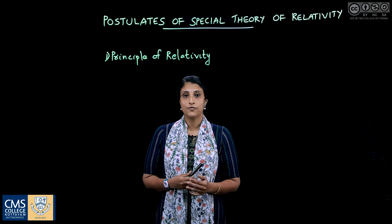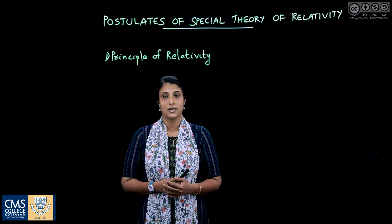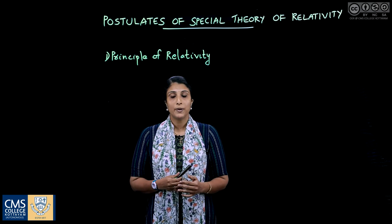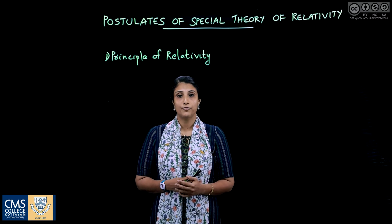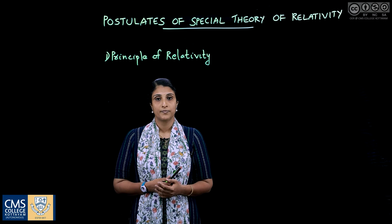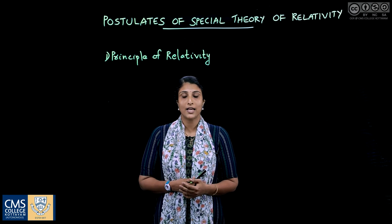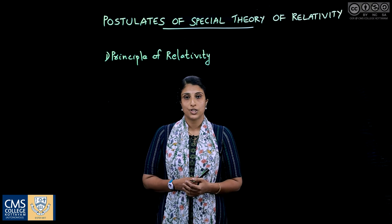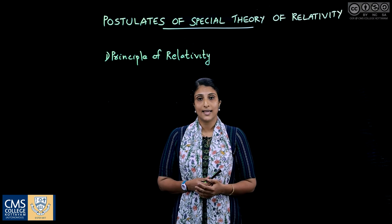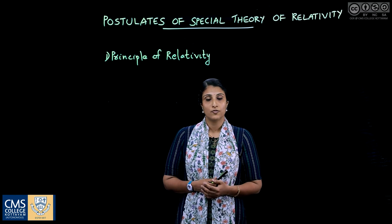If the laws of physics took different forms for different moving observers, then it would be possible to form different equations of motion for different moving observers, and it would be able to find the nature of an observer's motion. But such a distinction does not exist.